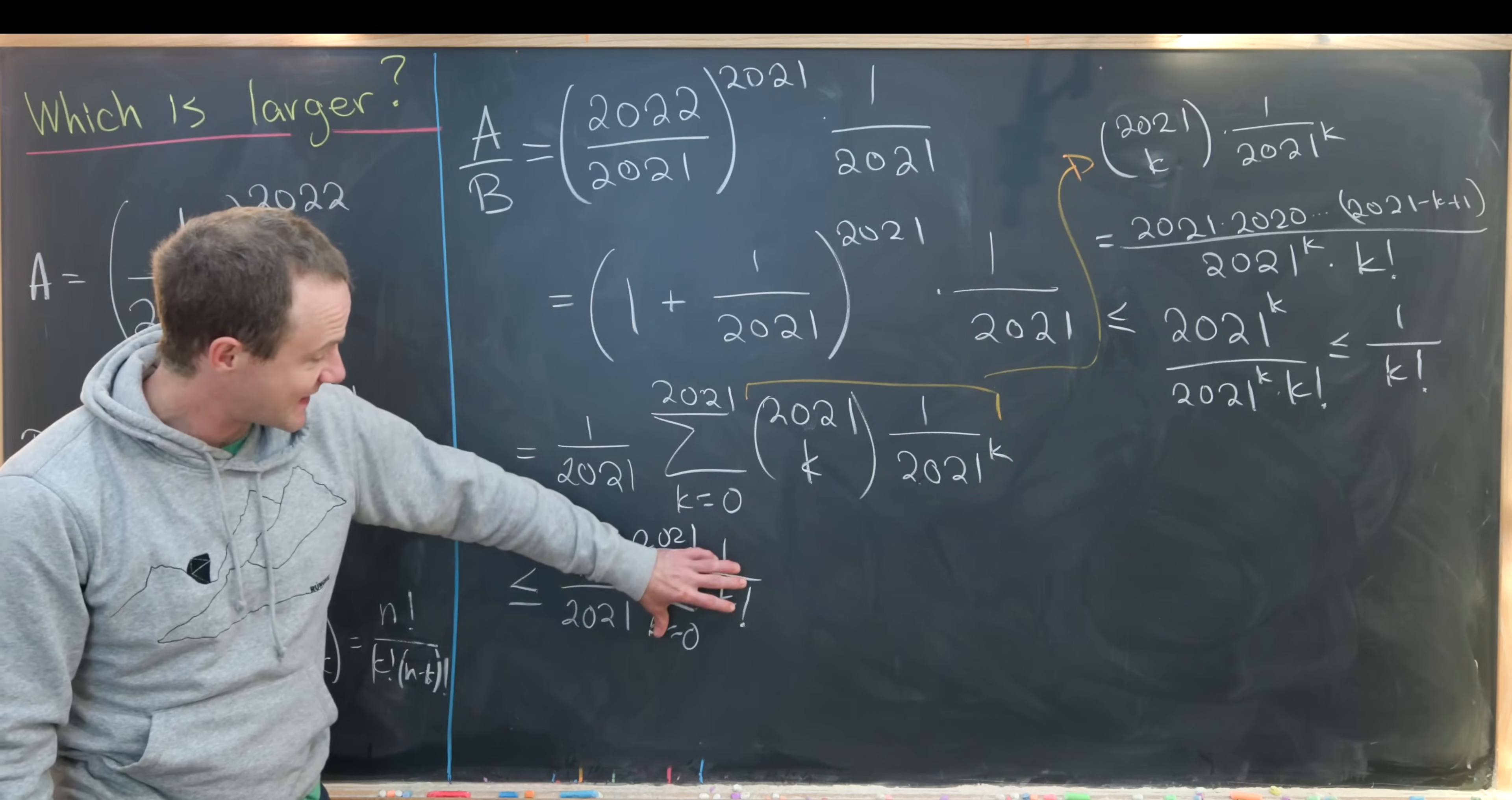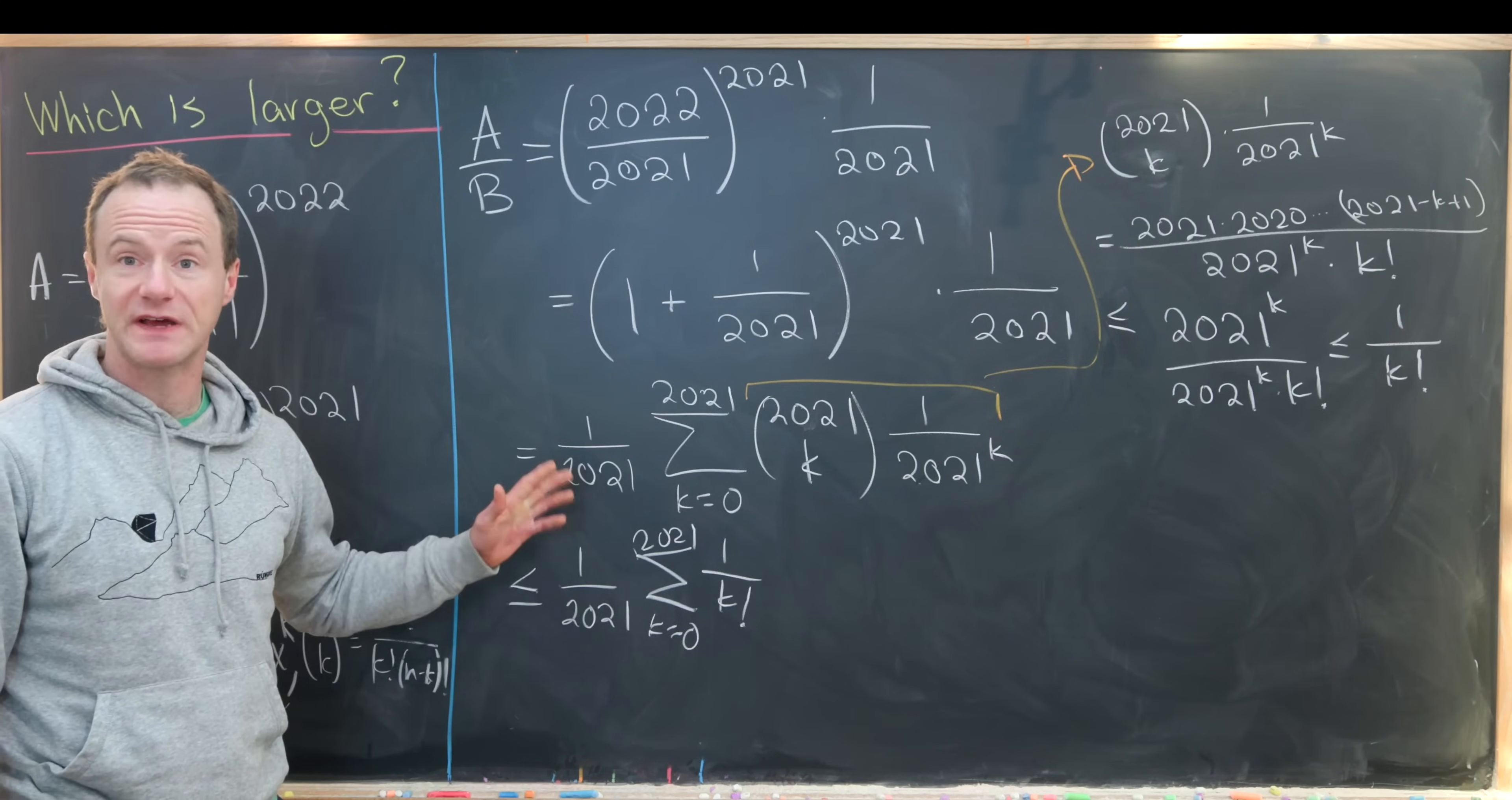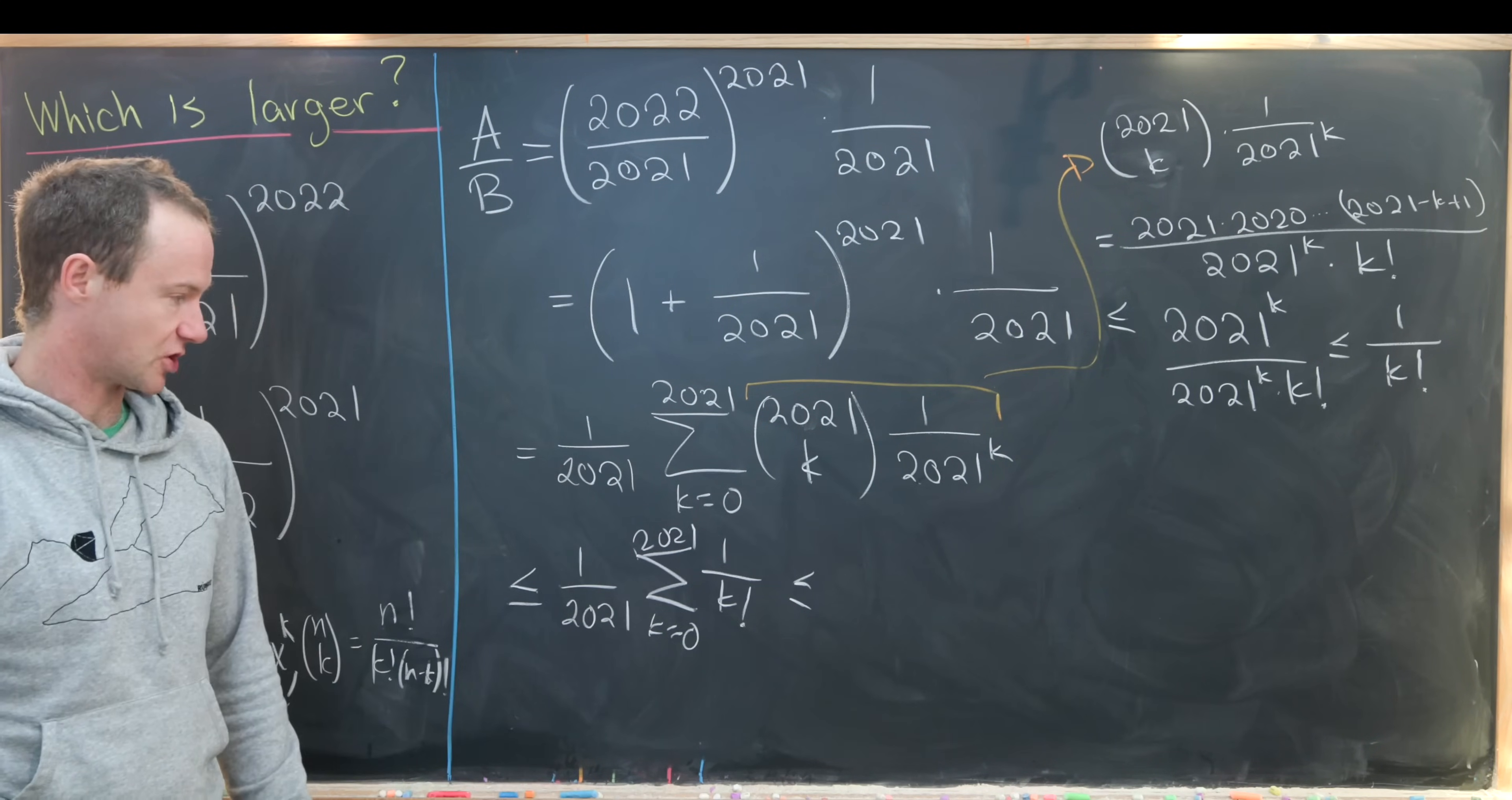Now I'll take this finite sum which ends at 2021 and I'll replace it with an infinite sum that never ends. That will clearly be larger because it contains infinitely many more terms.